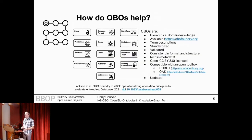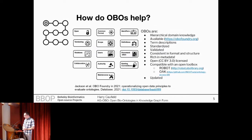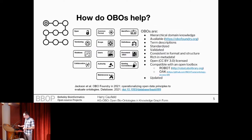So how do these open biological or biomedical ontologies actually help? OBOs — you can find out more on the OBO Foundry, and there's a pretty recent paper on them as well — they're all collections of hierarchical domain knowledge in biology. They have generally very rich term descriptions, they're standardized and validated by a variety of fairly rigorous criteria, they have consistent format and structure and very rich metadata, and they cover a fairly wide array of different domains. They're also compatible with an open toolbox like the ontodev tools, things like ROBOT and increasingly more integrated toolboxes like OAK, which work directly with these OBO ontologies very well.